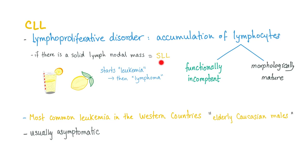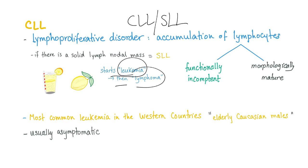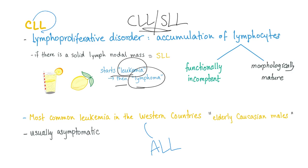If there is a solid lymph node mass, we call it SLL — small lymphocytic lymphoma. Together we can call them CLL/SLL, which starts as a leukemia then lymphoma. The most common leukemia in Western countries is CLL. Contrast that with the most common leukemia worldwide, which is ALL.